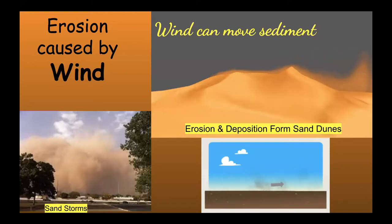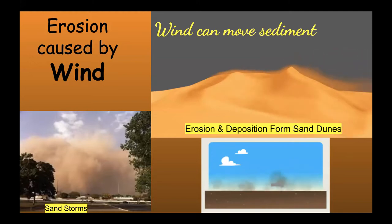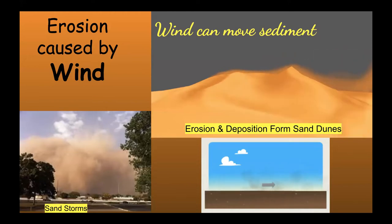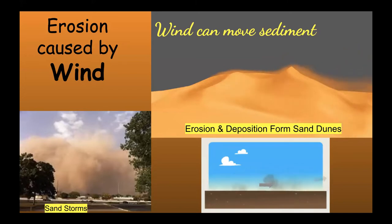Wind can move sediment. A great example is sand dunes: wind picks up tiny sand particles and carries them to a new location. Eventually, due to gravity, that sand is deposited in a new location, forming sand dunes. Through erosion — the movement — and deposition — the dropping — we have sand dunes forming.